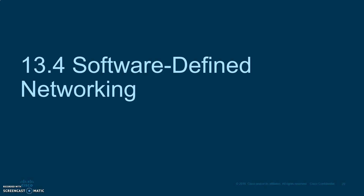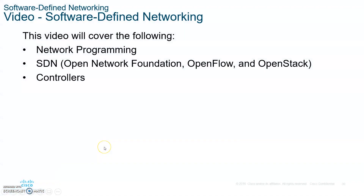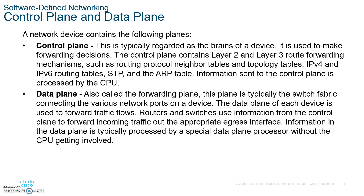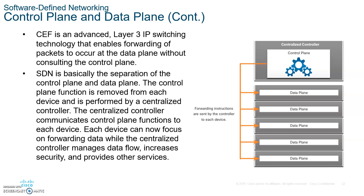We left off at SDN, Software Defined Networking. A device contains two planes: the control plane and the data plane. The control plane is typically regarded as the brain of your device and is used to make forwarding decisions. This is where you have your routing protocols, topology tables, IPv4 routing tables, STP, and so on. The data plane, on the other hand, is the forwarding plane — the switch fabric connecting the various network ports on your device. SDN controls both of them together.